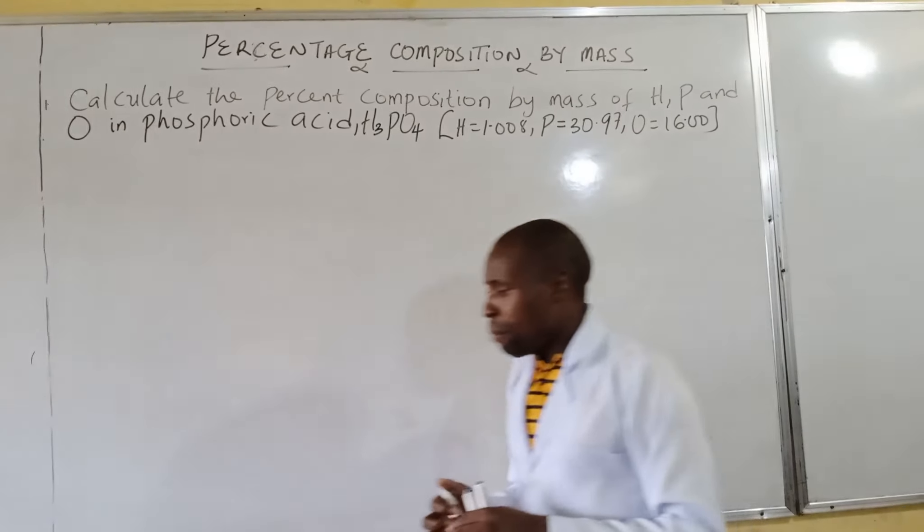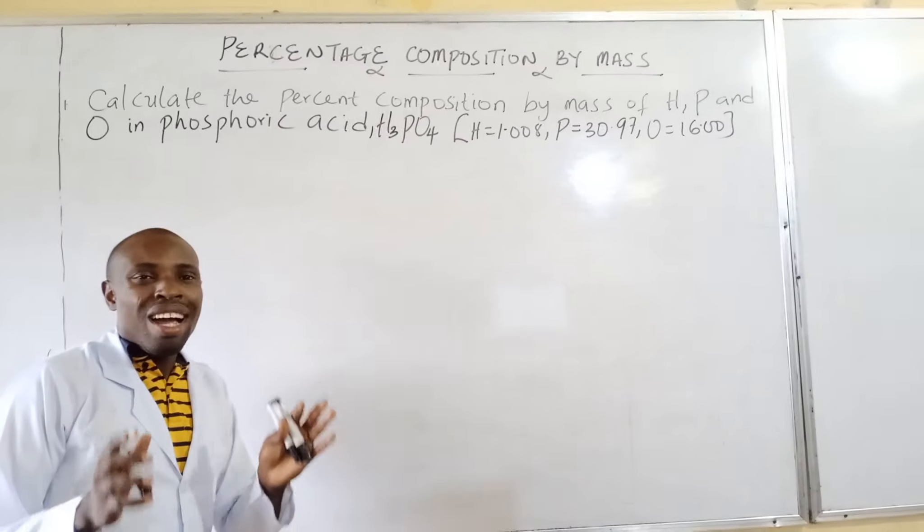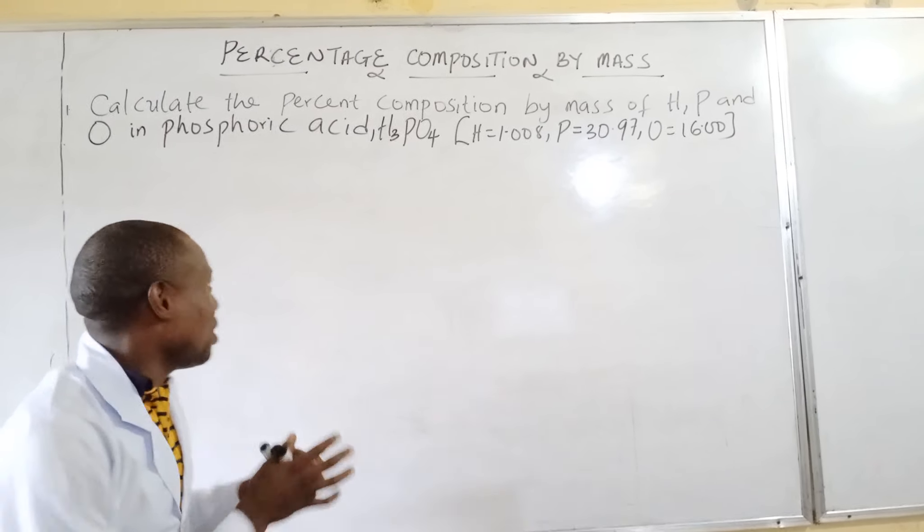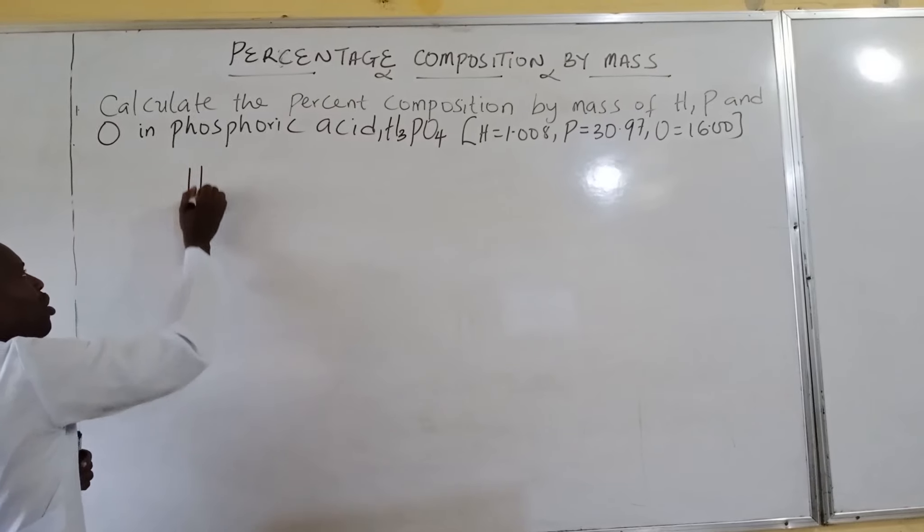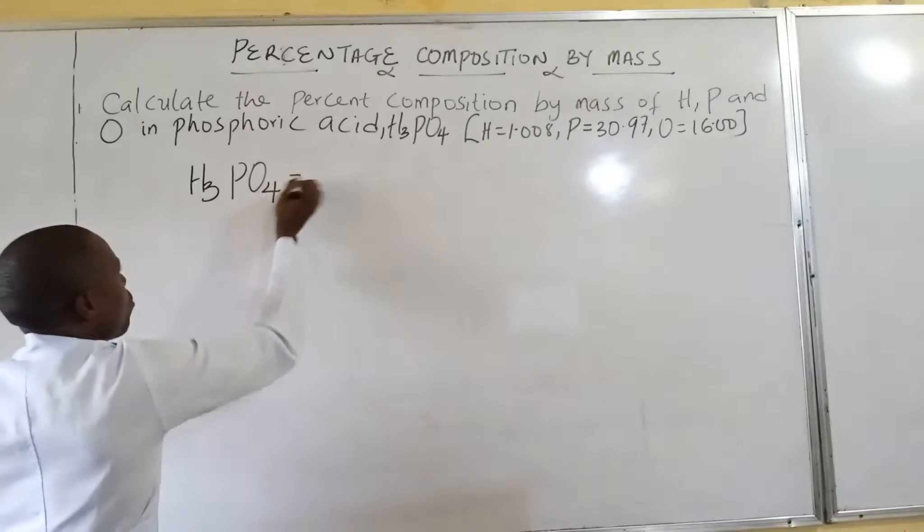In doing it for each element, the first step is to calculate the molar mass of the compound, which is the acid H3PO4. We will start.